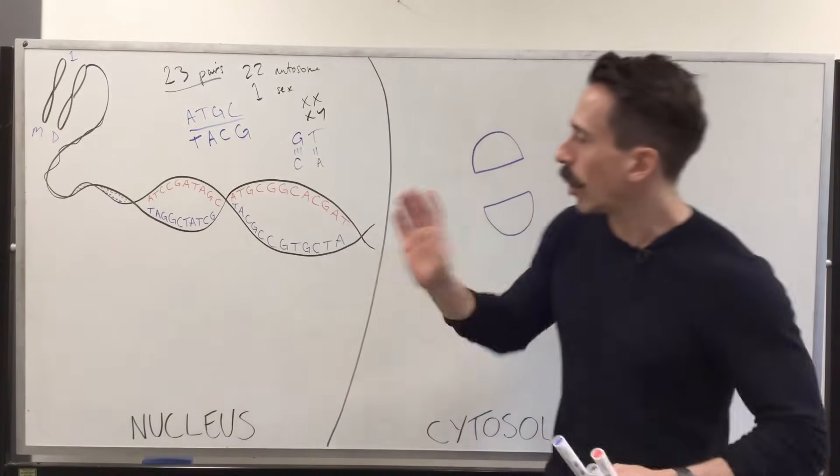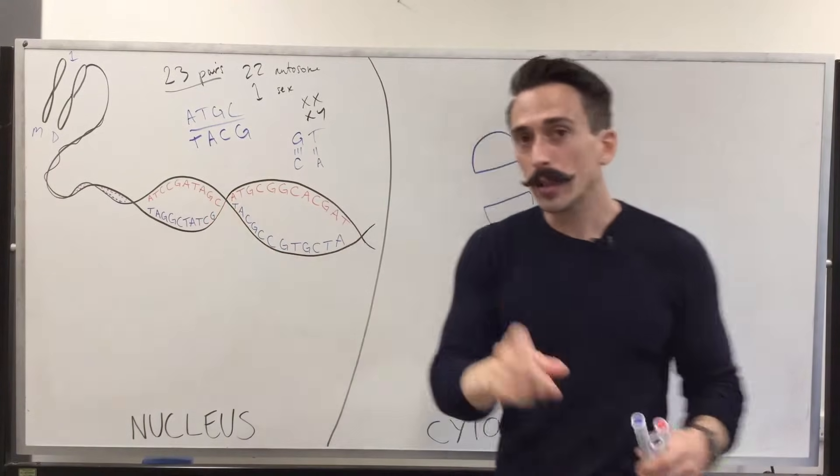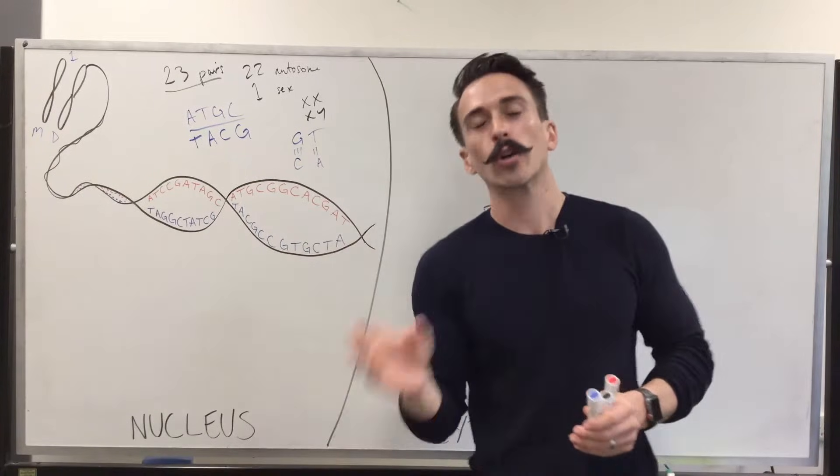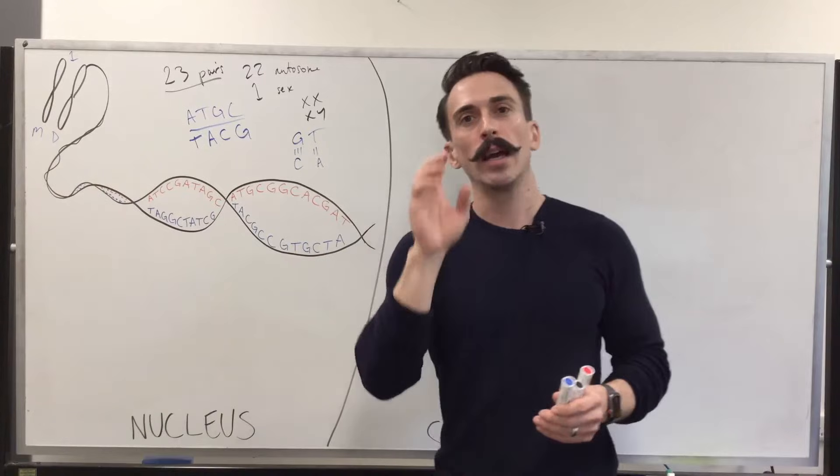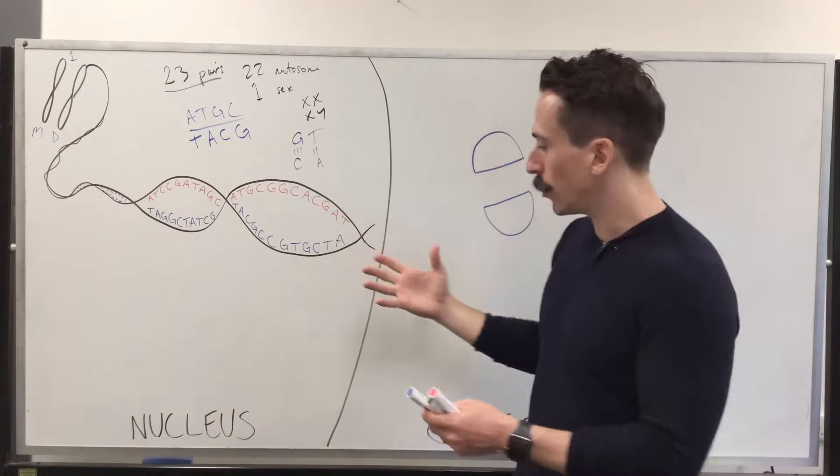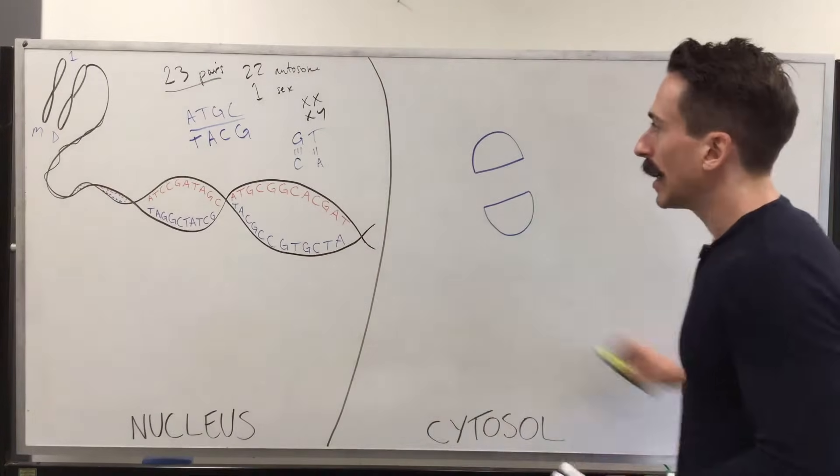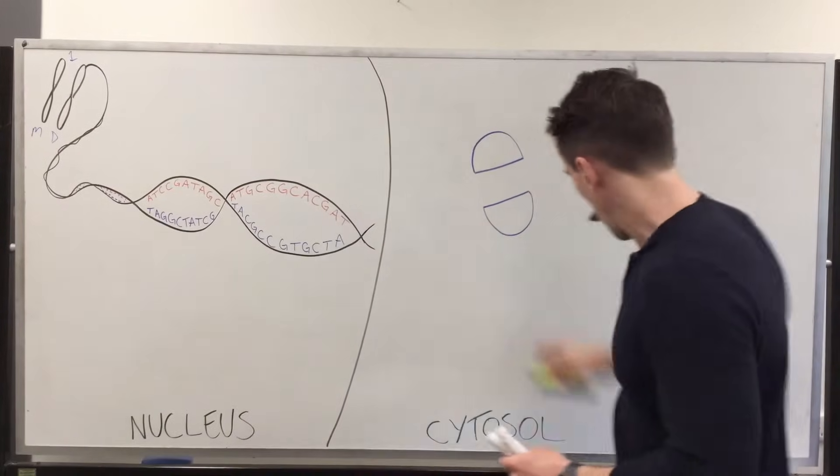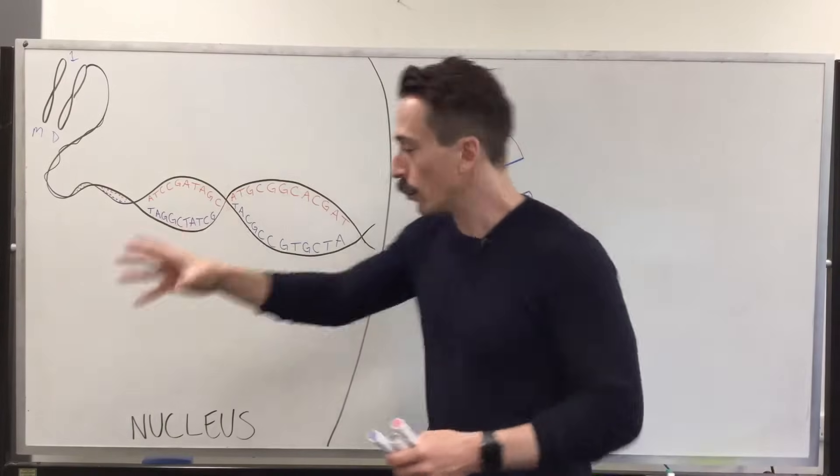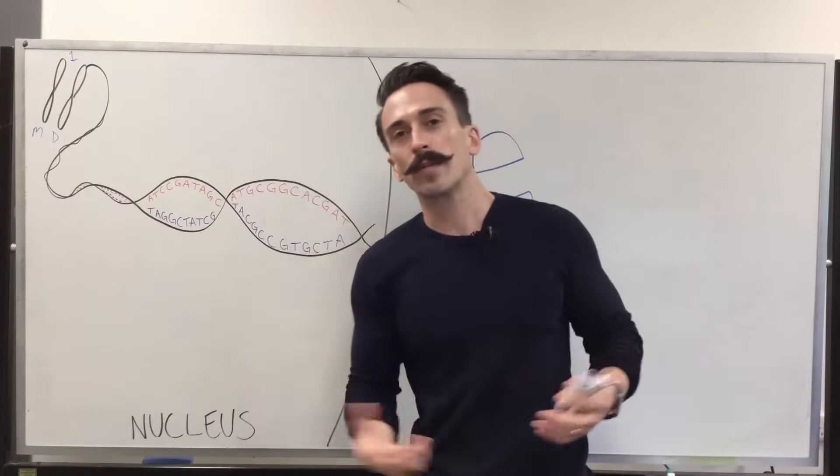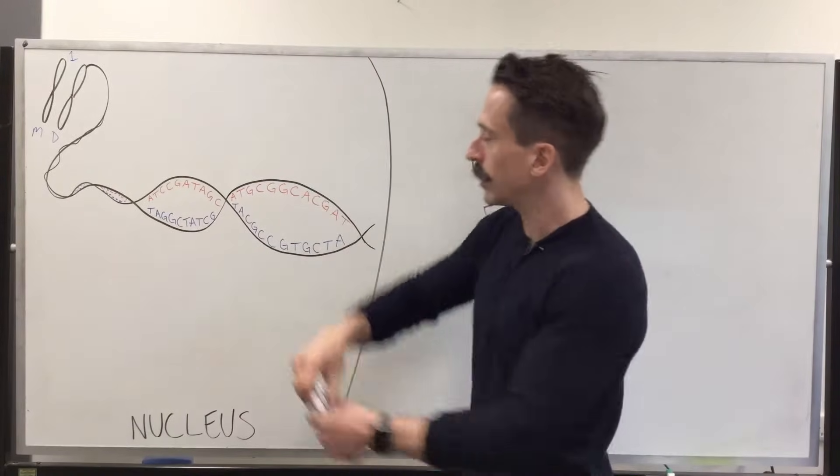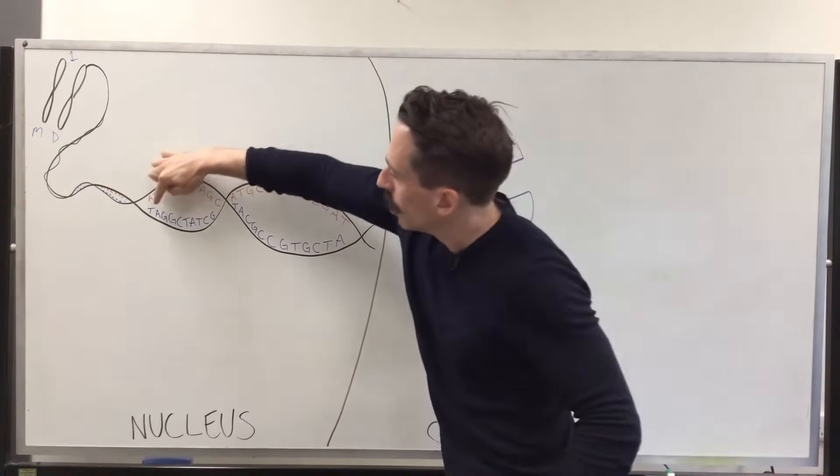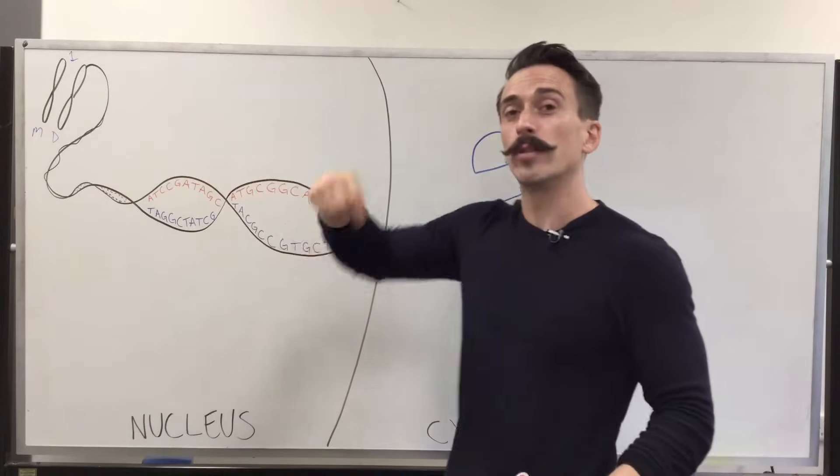Now, what we want to do is we ultimately want to turn this DNA into proteins. First thing we need to do is we need to turn the DNA into an intermediate molecule called RNA, specifically mRNA. Now, how do we do this? Well, what we need is a specific type of transcriptional machinery called an RNA polymerase. RNA polymerase will come along with the help of some other proteins and enzymes. It will unravel this double helix and it will read these nucleotides and produce another strand.